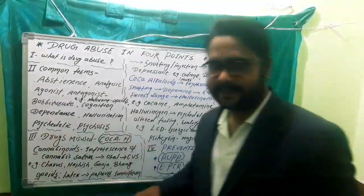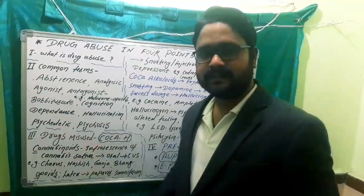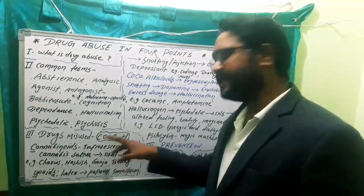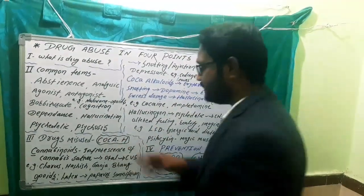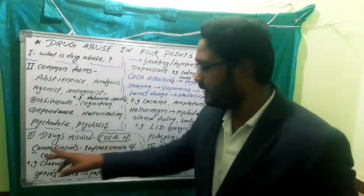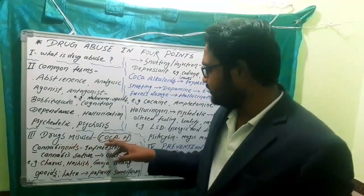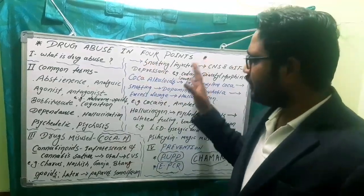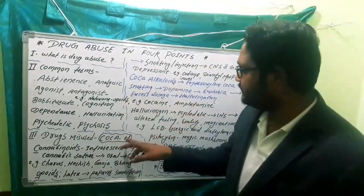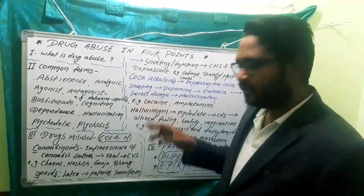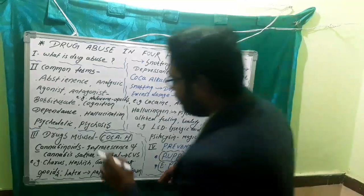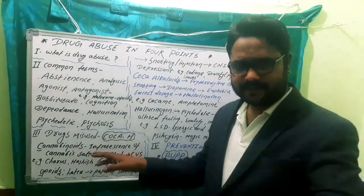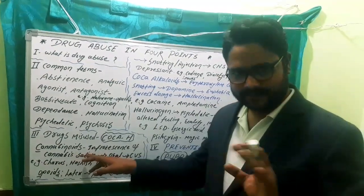Now let us see the main drug categories using a shortcut: COCH — C for Cannabinoids, O for Opioids, C for Coca alkaloids, and H for Hallucinogens. Let us see them one by one. C for Cannabinoids — these are taken from the plant Cannabis sativa, specifically from its inflorescence part.